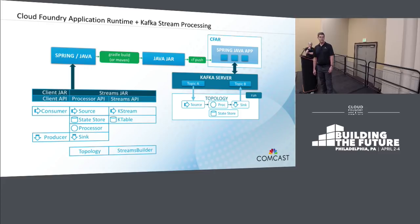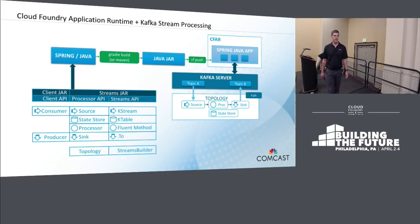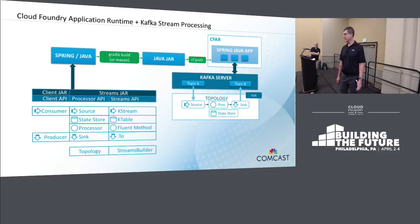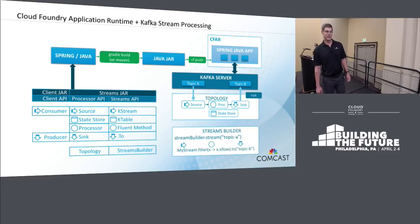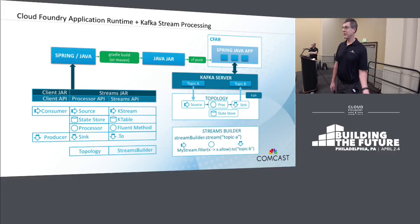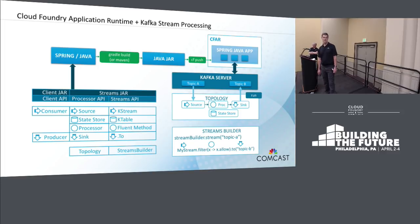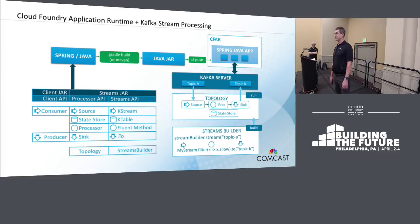The kStream and kTable classes provide fluent methods that can be chained together to define the desired processing. One of these methods, the 'to' method, can be used to send messages out to a Kafka topic. To implement our filtering example using the Streams API: first, we create an instance of the StreamsBuilder class, then use that to define a kStream object that connects to topic A, then chain together the filter and 'to' methods. The filter method accepts a lambda function that is evaluated to determine if a message should be output or not. The 'to' method writes the messages out to topic B. We use the StreamsBuilder's build command, which actually generates a processor API topology that we can then run to begin processing messages. When building our stream processing application, we can mix and match the capabilities from all three of these APIs.